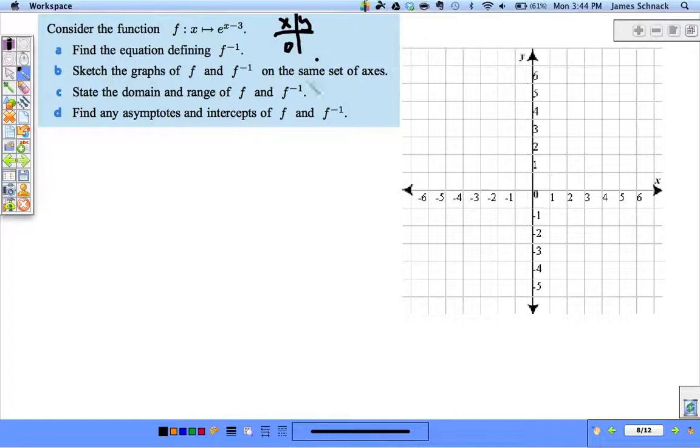I'm going to start by graphing this. Let's take a step back here. For e to the x: when x is zero, y is one. When x is one, y is e, which is 2.71. So that would be those two points roughly, and we'd have an asymptote on the x-axis.